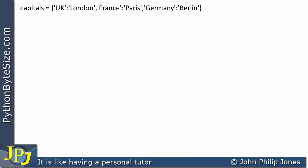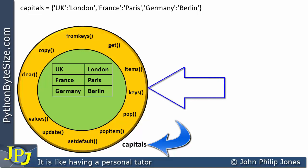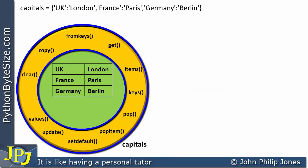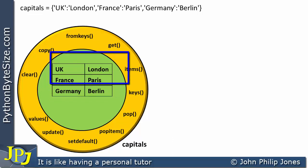It can be useful to represent program statements and their effect by drawing a schematic diagram. This schematic diagram is a representation of an instance of the dictionary class, bound to the name 'capitals'. In the area shown, I've displayed the methods defined in the dictionary class that are now available to the instance. In the green area in the center, you can see the three key-value pairs defined in the program statement.